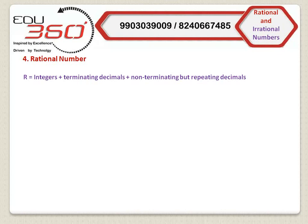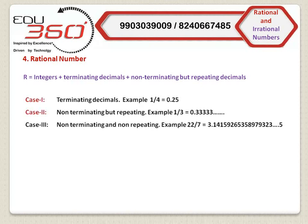In the set of rational numbers, we will include fractions or decimal expressions but with one restriction. If we divide two integers, three cases may arise. Case one: terminating decimals. For example, 1 by 4 gives 0.25, which is a terminating decimal because this expression terminates after 0.25. Case two: non-terminating but repeating decimals. For example, if we divide 1 by 3, we will get 0.3333..., which is a non-terminating decimal where digit 3 is repeating.